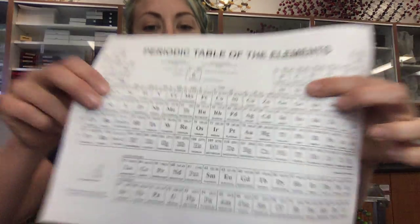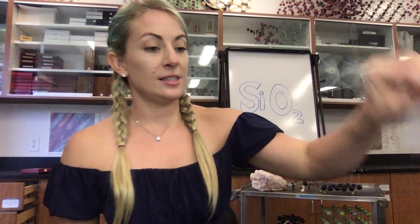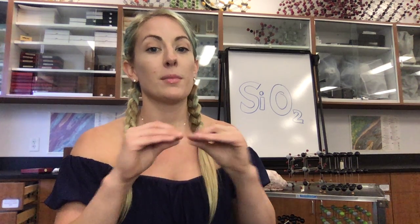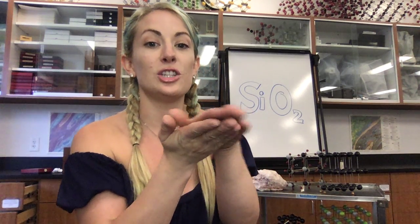Here on this board I have SiO2. Si, on a periodic table of elements, is silicon — like Silicon Valley — an element commonly found in rocks. The reason Silicon Valley is so called is because motherboards, chips, and computers are made with silicates. If you were to take some sand, melt it down, and turn it into fine sheets, those sheets of silicates are what's used in computers.